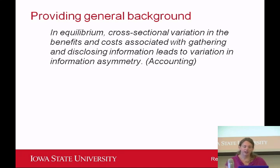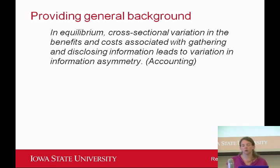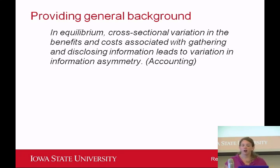Our next step is providing general background. Sentences with this function are general statements about knowledge within a particular field — knowledge shared by people in your field, not knowledge requiring a citation, not things you would need to necessarily explain, just general facts or information. For example, from accounting, this is general information that accountants would know that wouldn't be contested in any particular way. It's important to lay out these general facts so readers know where you're coming from before you move into more specific or contested areas.